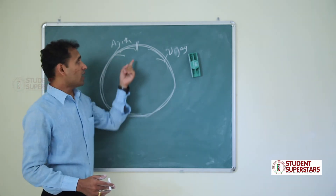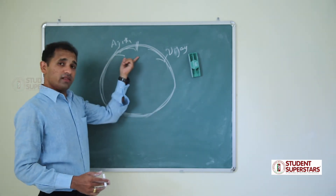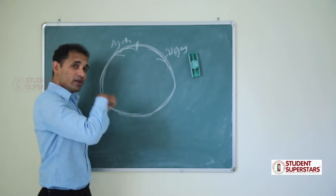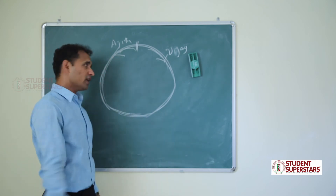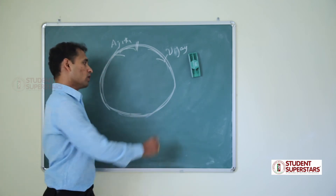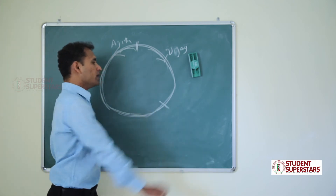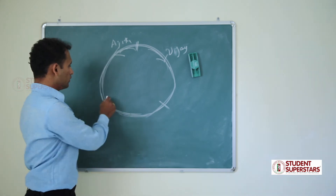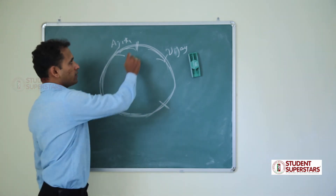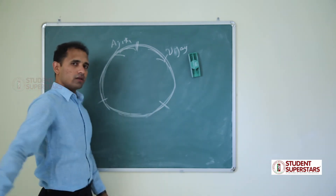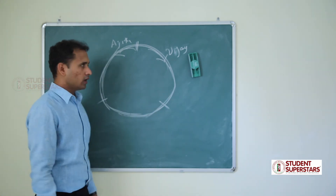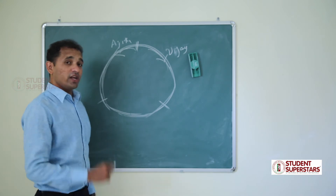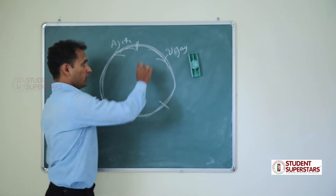If Vijay is covering the starting point on every third minute, it means he is taking three minutes to complete the entire circular track. So after one minute he will cover one third, after two minutes two thirds, and after three minutes he will cover the starting point. And he is meeting Ajit on every minute.